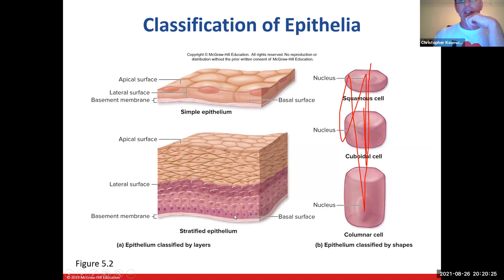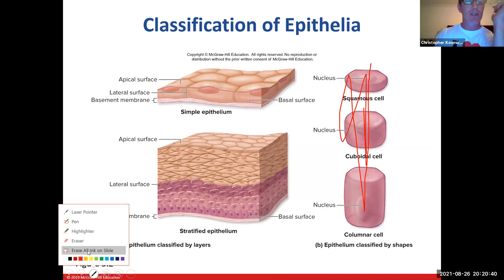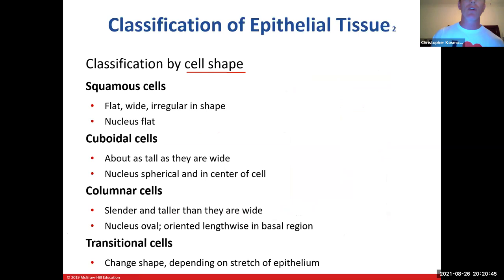Pseudostratified epithelium — pseudo means falsely — looks like it's stratified, like it has several layers, but it does not. It's only one layer, but all of the cells make contact with the basement membrane, while not all of them reach the apical surface. The apical surface is the top — like the apex of a mountain. Looking at the slide: simple epithelium is one cell layer thick, all cells sit on the basement membrane, with a basal surface at the bottom and apical surface at the top. Stratified epithelium has multiple layers, with only the basal layer contacting the basement membrane.